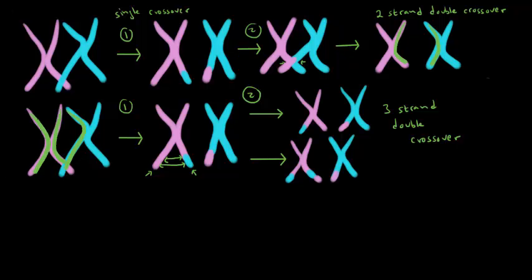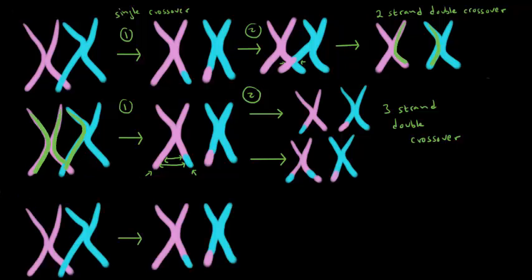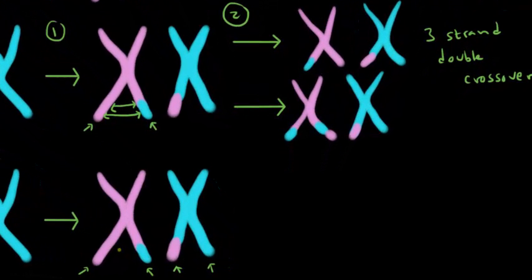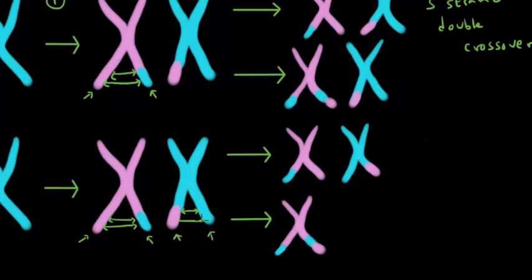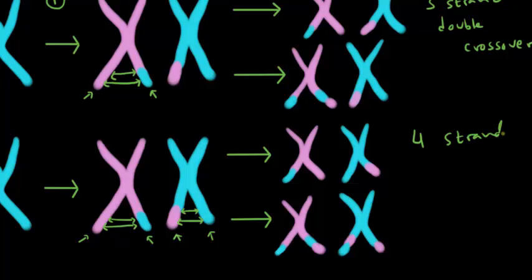Let's look at a third scenario. We're going to have crossing over happening one time, and then again a second time — but now crossing over happens between these two chromatids and also between these two chromatids, involving all four strands. One scenario is that crossing over in both happens right at that spot, giving a set of chromosomes that looks like that. Or maybe crossing over in the purple chromosome happened over there, and crossing over in the blue chromosome happened over there, giving a different set. What we just described is called a four-strand double crossover.